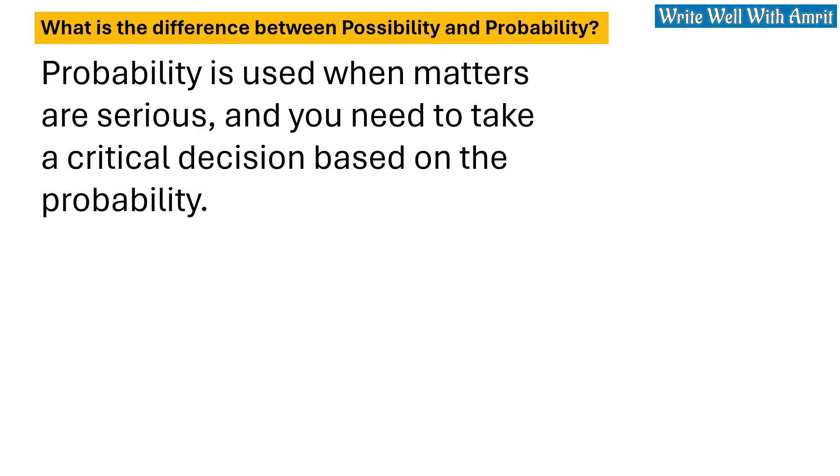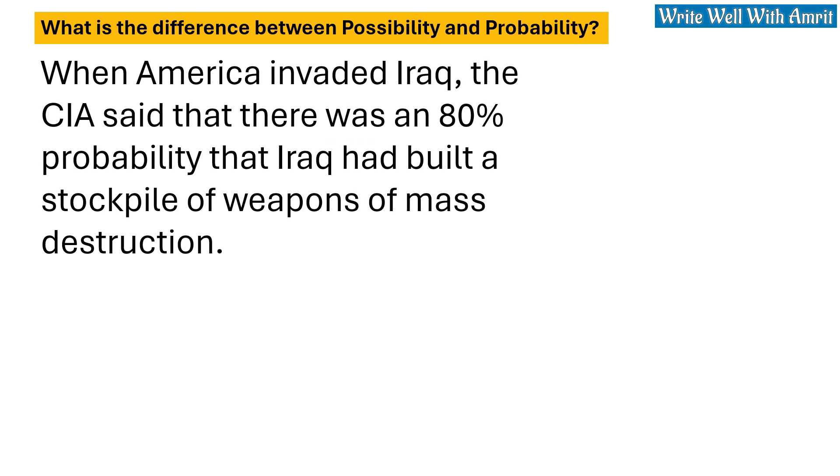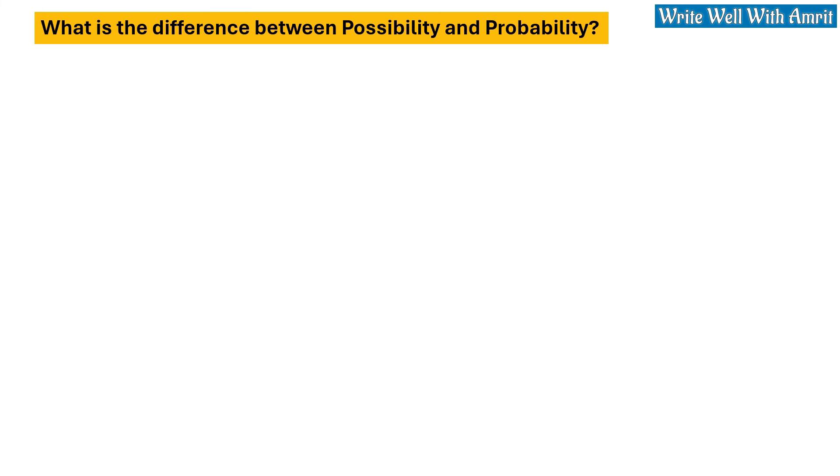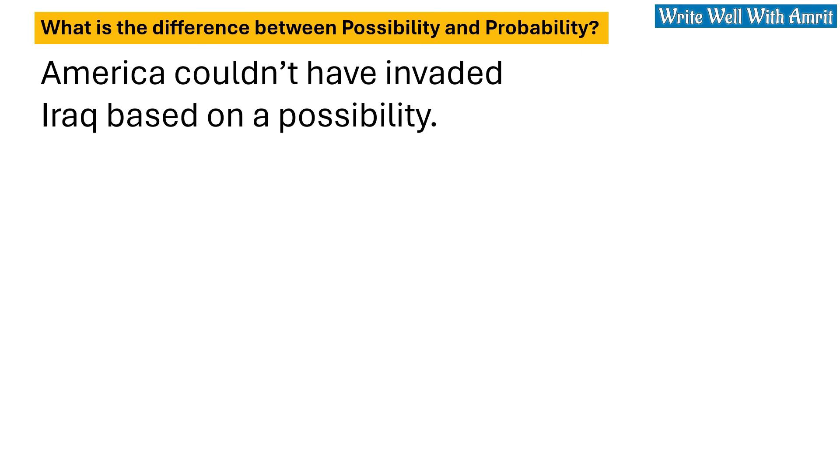Probability is used when matters are serious and you need to take a critical decision based on the probability. When America invaded Iraq, the CIA said that there was an 80% probability that Iraq had built a stockpile of weapons of mass destruction. America couldn't have invaded Iraq based on a possibility.